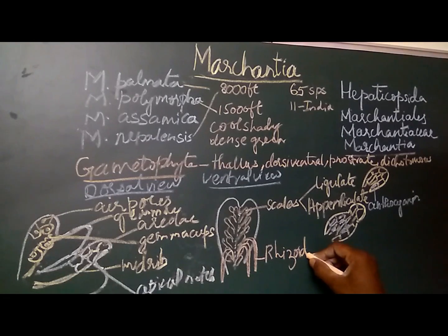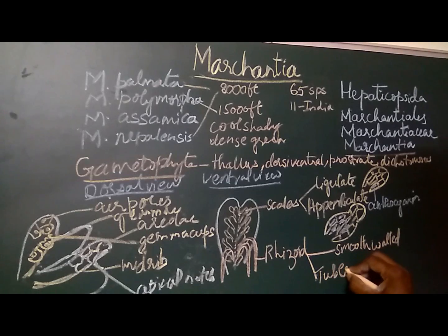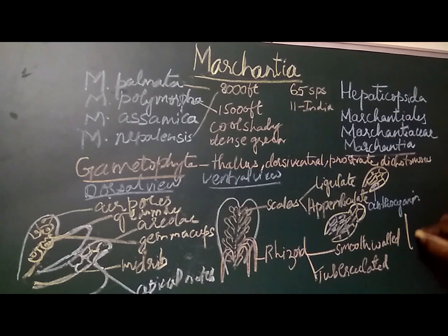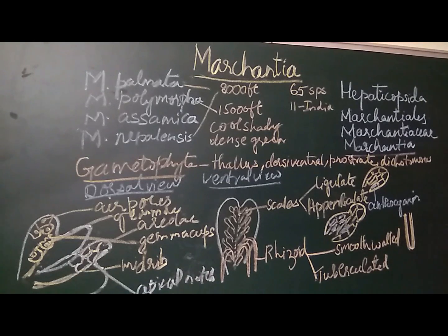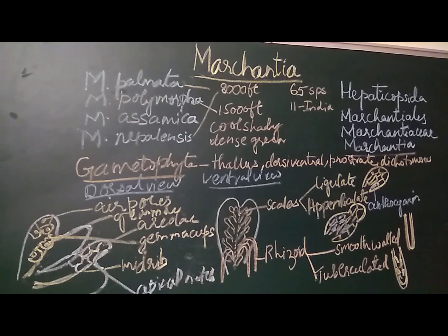The rhizoids are also of two types: smooth-walled rhizoids and tuberculated rhizoids. The smooth-walled rhizoids are simple finger-like projections with smooth outer and inner walls. The tuberculated rhizoids have small peg-like invaginations on their inner surface, which is why they are called tuberculated rhizoids. This completes the morphology of the thallus; next we will learn about the internal structure of the thallus.